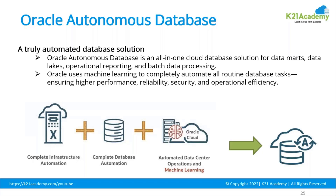With an Autonomous Database, you get the highest performance and availability. The DR option is also there, but it is optional. If you select it, it will automatically create DR for you on another hardware, making it optimized against disaster. But that comes with a cost — if you provision it, two databases will be running.